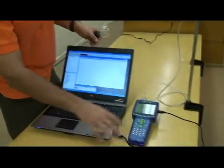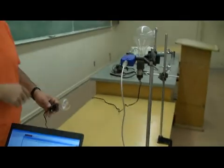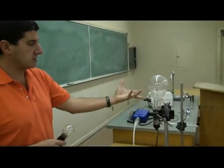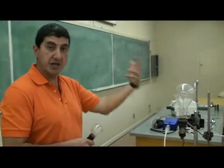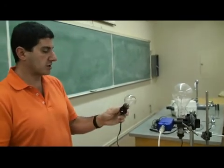So, we have the computer here set up again, we have the Explorer GLX, we have the light sensor and we have a big light bulb that is going to be really bright and it's going to be analogous to a big star that's bright and very luminous.